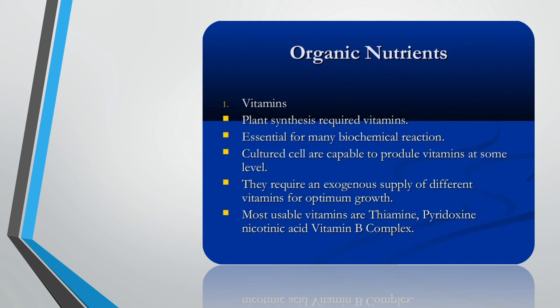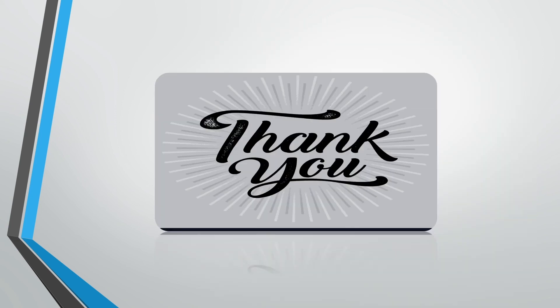Cultured cells require an exogenous supply of different vitamins for optimum growth. The most usable vitamins are thiamine, pyridoxine, nicotinic acid, and inositol — all belonging to the vitamin B complex. Thank you.